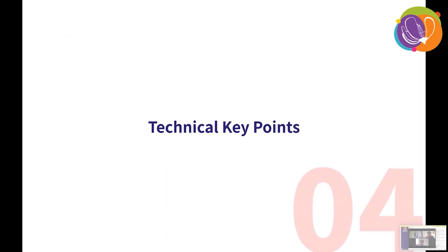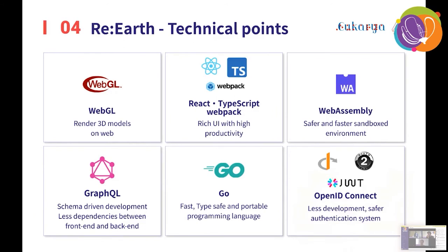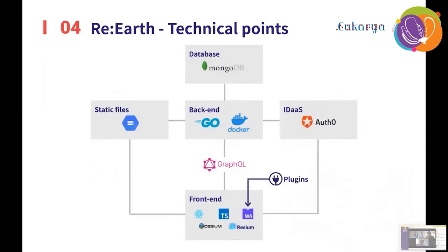Next, let's take a look at some of the technical points of Reels. This is the overview and architecture diagram of Reels. We use MongoDB as the database and Golang as the backend programming language. The frontend uses React and TypeScript and WebAssembly. GraphQL is the query language that connects the backend and frontend. We use Auth0 as the authentication server.